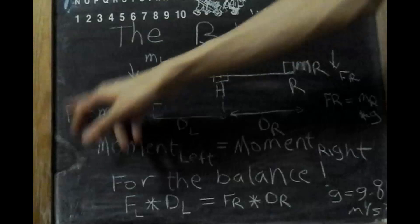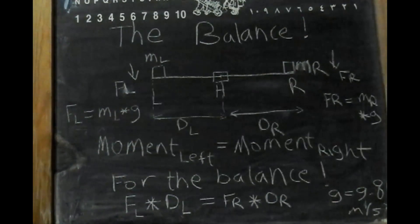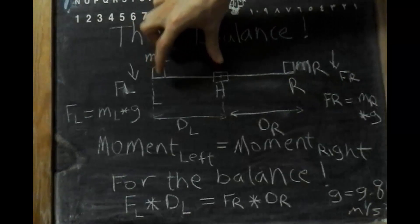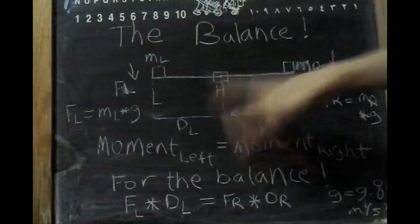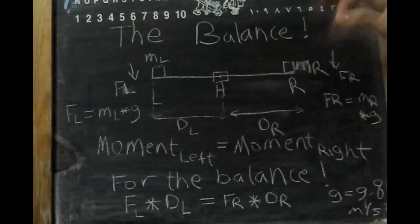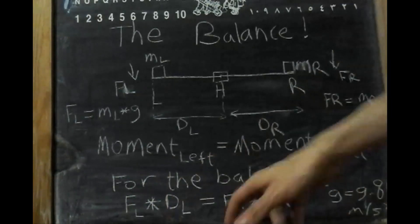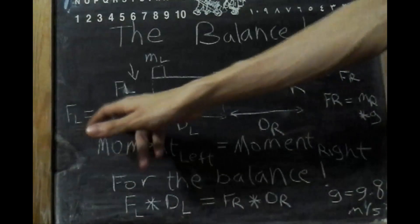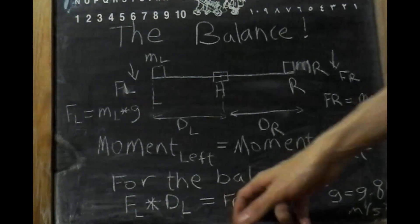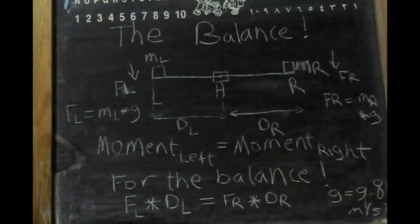So if FL, the left force, equals the mass multiplied by G (gravity), we can multiply it by the distance from the mass to the hinge or center to get the moment. If this moment equals the moment at the right, balance will occur. The balance equation is: FL × DL = FR × DR, where FL = ML × g and FR = MR × g.